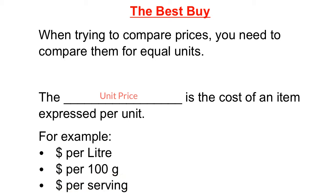If you ever go to a bulk store, the prices are listed as dollars per pound or dollars per kilogram or something like that. The unit price is what we're going to use in order to compare prices of similar items.